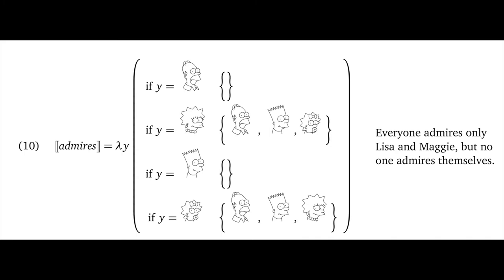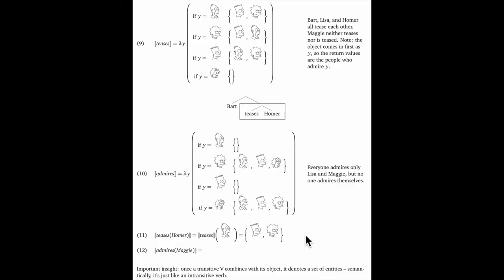We could continue in this way. Again, the compositional insight here is that transitive verbs combine with their direct objects to become semantically intransitive sets of entities. Right here, you see a simple breakdown of teases Homer. We look up the meanings for the two parts, teases and Homer, and we apply the meaning of teases to Homer, and we get the set of entities that tease him.